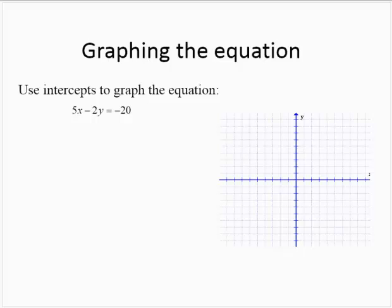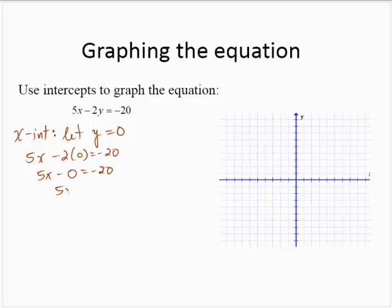For the equation 5x minus 2y equals negative 20, let's find the x-intercept. To find the x-intercept, we let y equal 0. So we have 5x minus 2 times 0 equals negative 20. That gives us 5x equals negative 20, which means x equals negative 4. So the x-intercept is negative 4, 0.